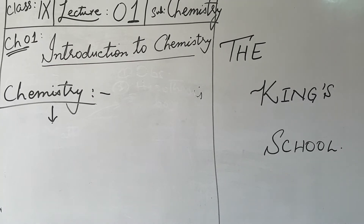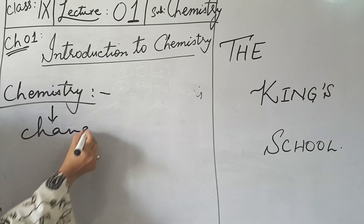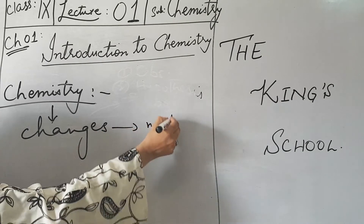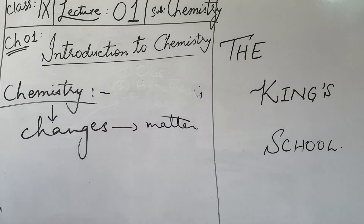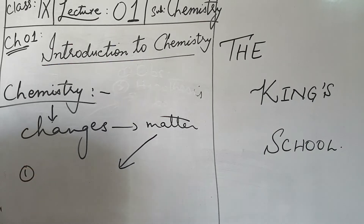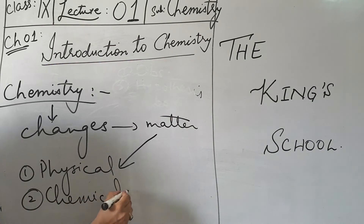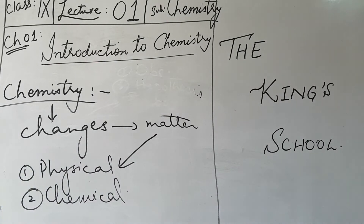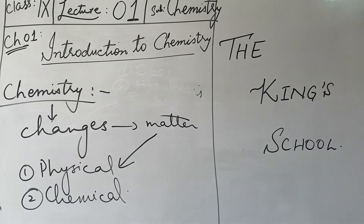Chemistry also deals with the changes involved in matter. In matter, two types of changes are possible: one is the physical change, and the other one is the chemical change. A physical change is when only the appearance changes — for example, if you break a piece of chalk into smaller pieces, that is a physical change.